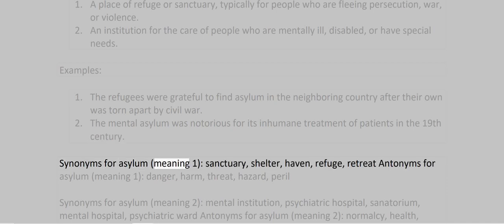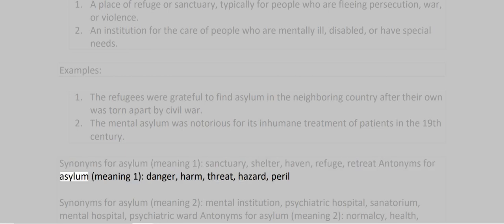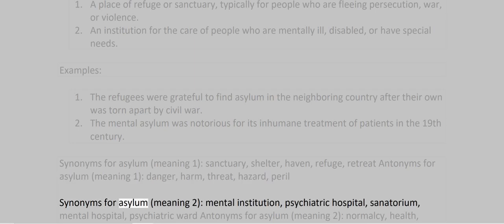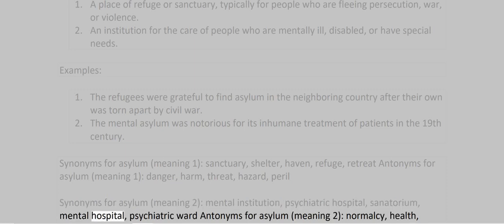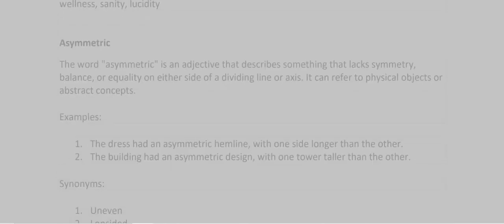Synonyms for asylum meaning 1: sanctuary, shelter, haven, refuge, retreat. Antonyms for asylum meaning 1: danger, harm, threat, hazard, peril. Synonyms for asylum meaning 2: mental institution, psychiatric hospital, sanatorium, mental hospital, psychiatric ward. Antonyms for asylum meaning 2: normalcy, health, wellness, sanity, lucidity.